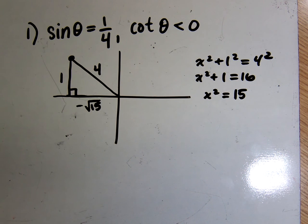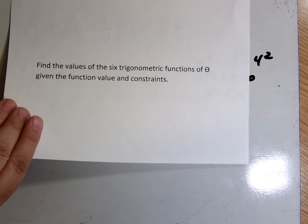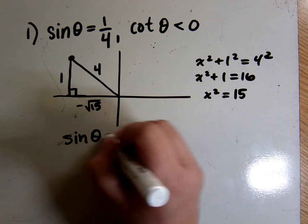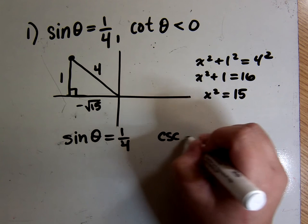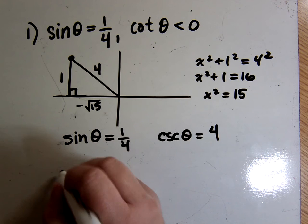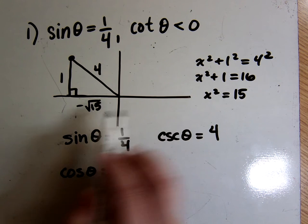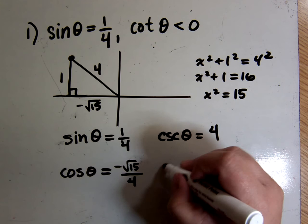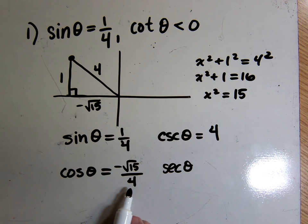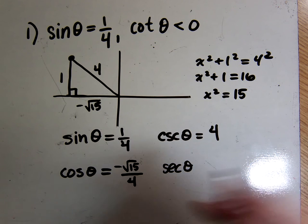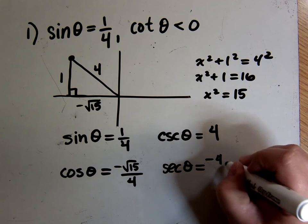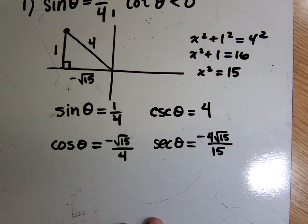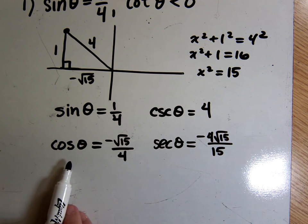Now I have everything needed to find the six trigonometric functions. Sine is 1 over 4. Its co-function, cosecant, is 4 over 1. Cosine is adjacent over hypotenuse, so that's negative square root of 15 over 4. The secant is the reciprocal of that — flipping it over and rationalizing gives negative 4 root 15 over 15. Notice the co-functions share the same sign: sine positive means cosecant positive; cosine negative means secant negative.